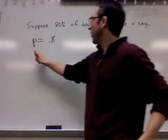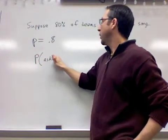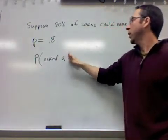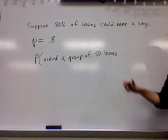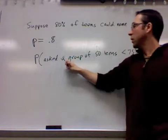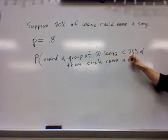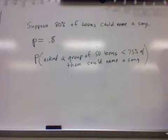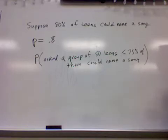The question I'm giving my students is, what's the probability that if you asked a group of 50 teens, less than 75% of them could name a song? So it's true that 80% of teens in America could name one of her songs. What's the chance that you got 50 teens together and less than 75% of them could actually name a song?